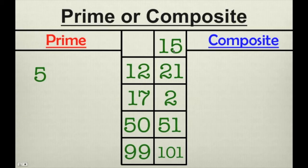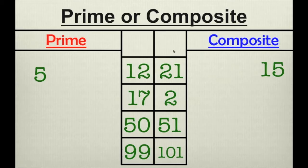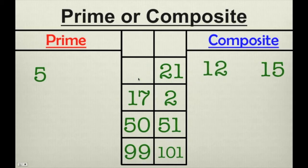15 is a composite number. It has factors of 1, 3, 5, and 15. How about 12? 12 is composite, because 12 has factors of 1, 2, 3, 4, 6, and 12 — more than just 2 factors.